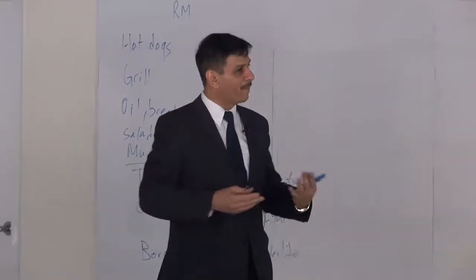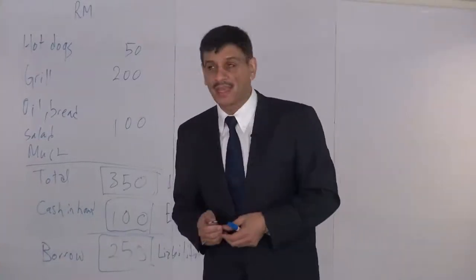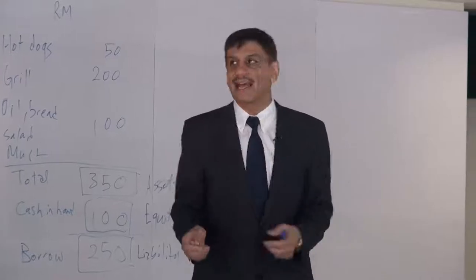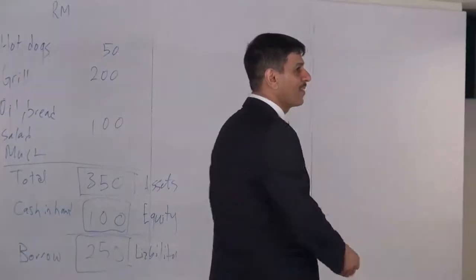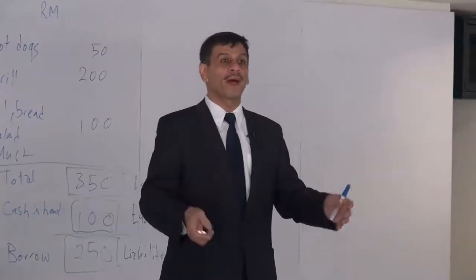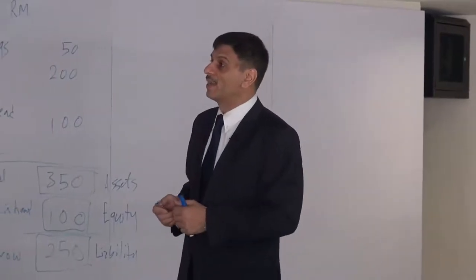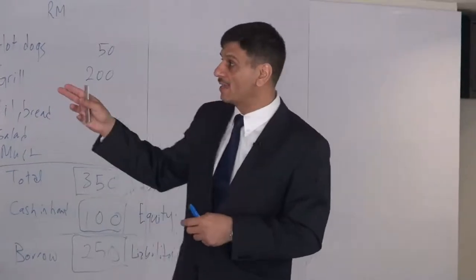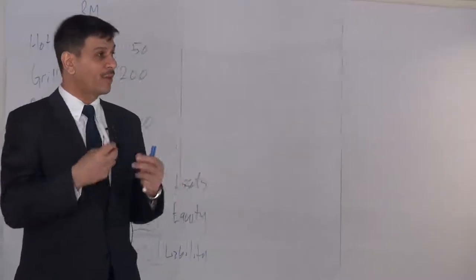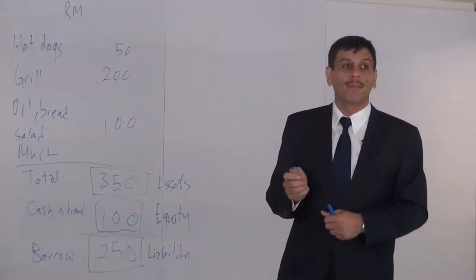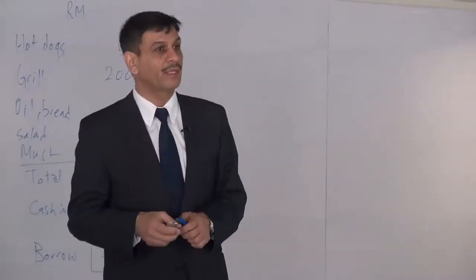This sheet has to always be balanced — assets always equals equity plus liability. Everything the business owns is called an asset. For your hot dog case it's the grill, the hot dogs, the bread; for this university it's the land, the labs, the buildings, the computers, the programs — everything is an asset. We either used shareholders' money to purchase it, hence called equity, or we borrowed the money, called liability. Always: assets equals liabilities plus equity — sometimes called shareholders' equity or owners' equity.